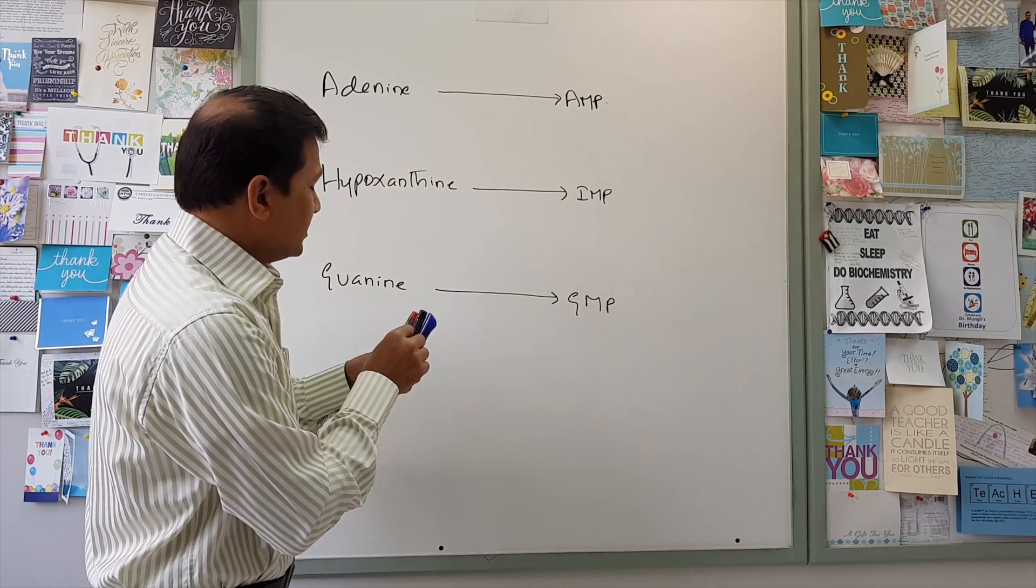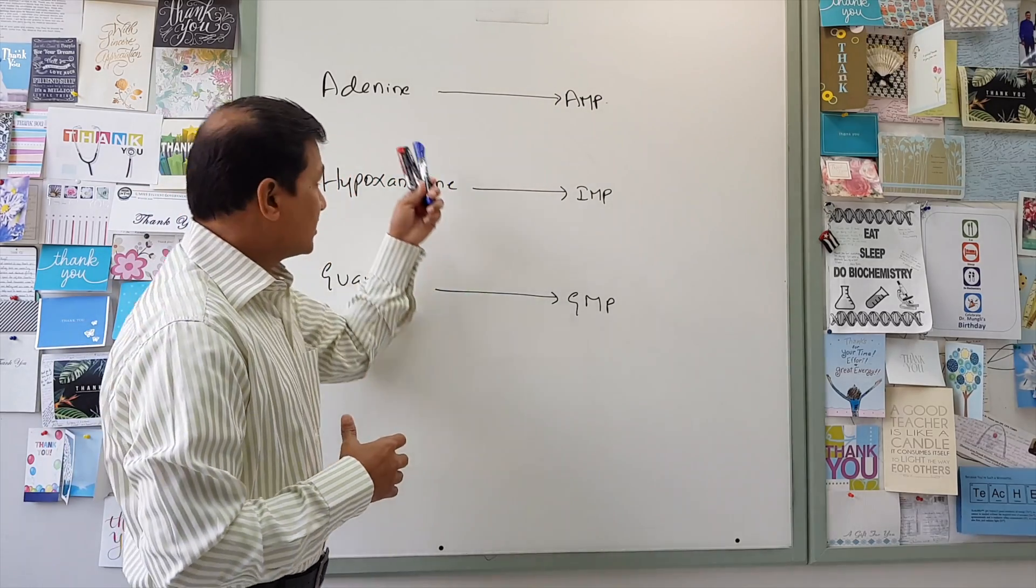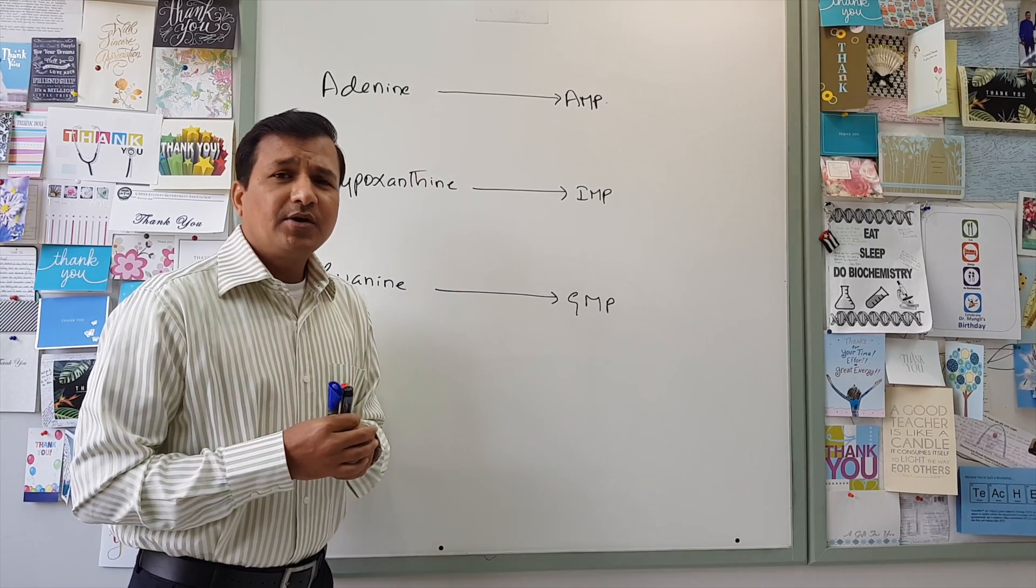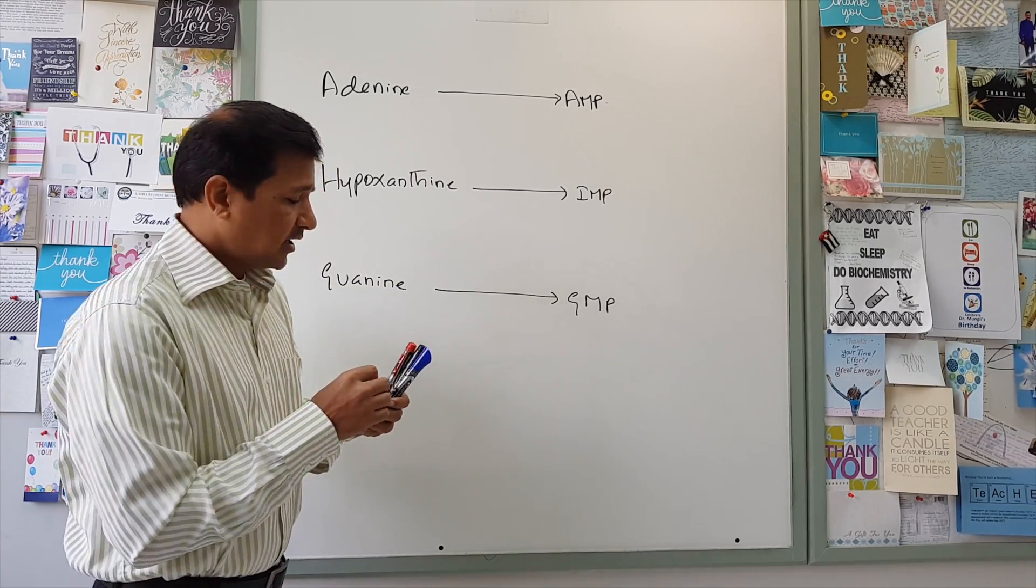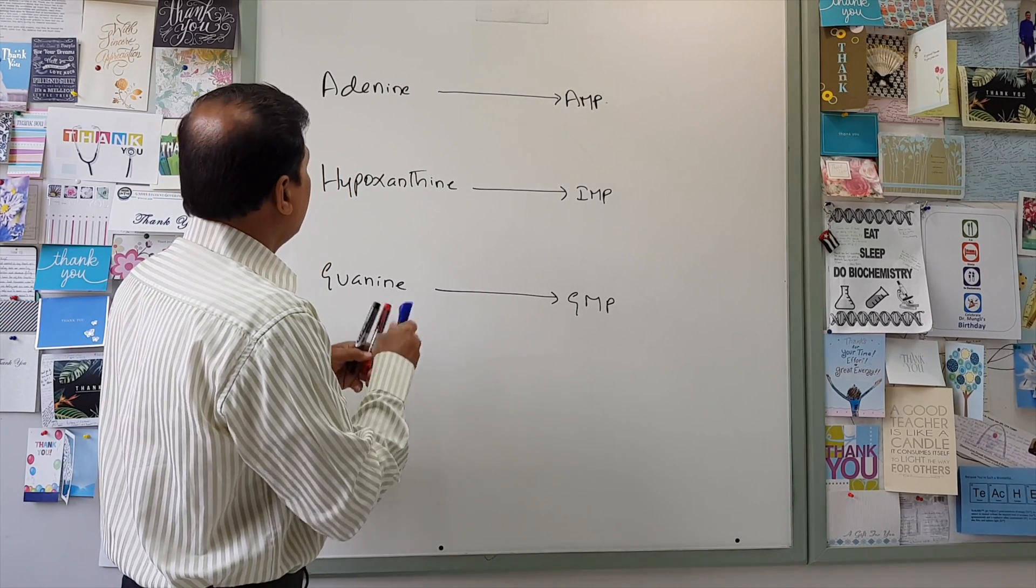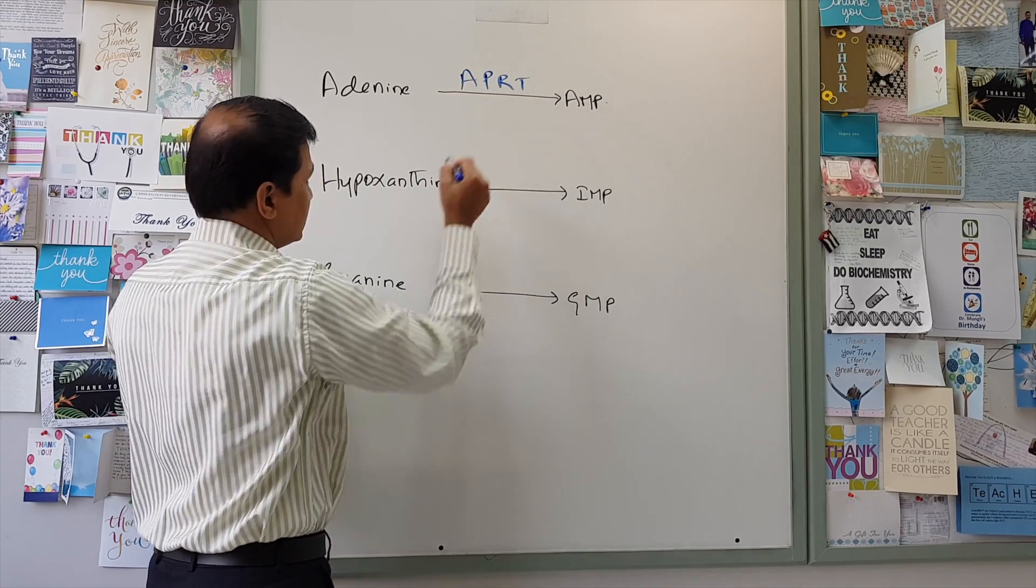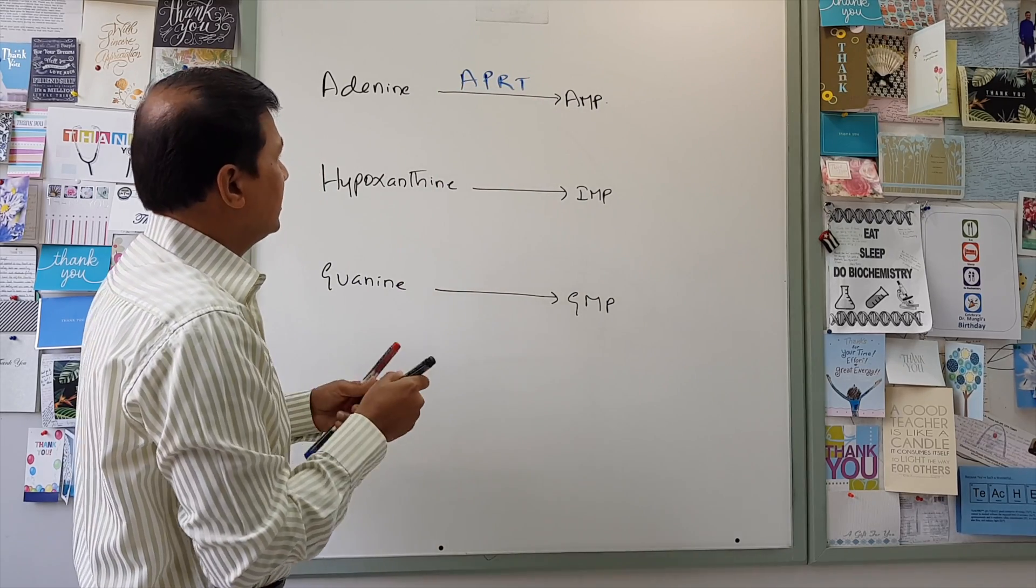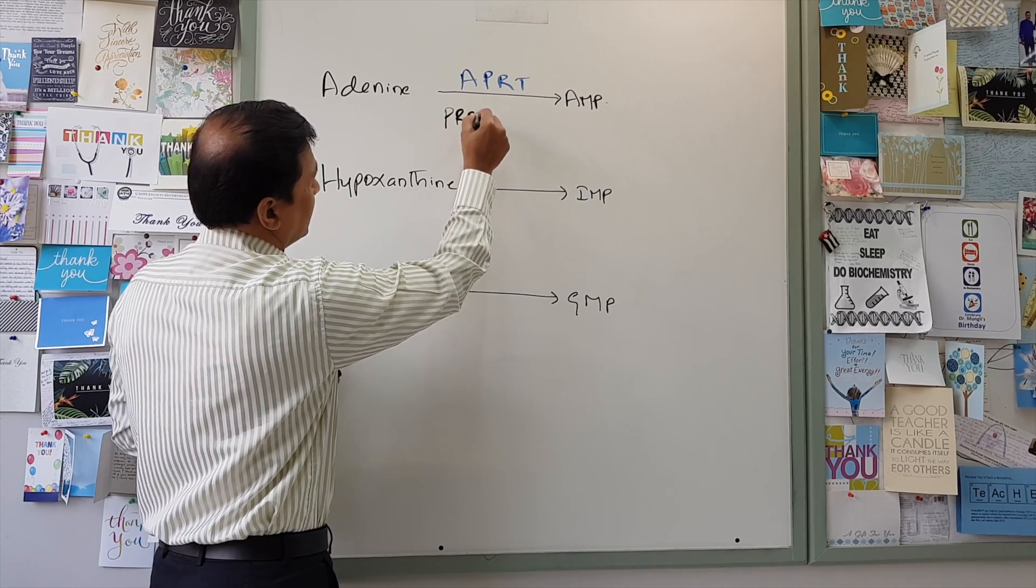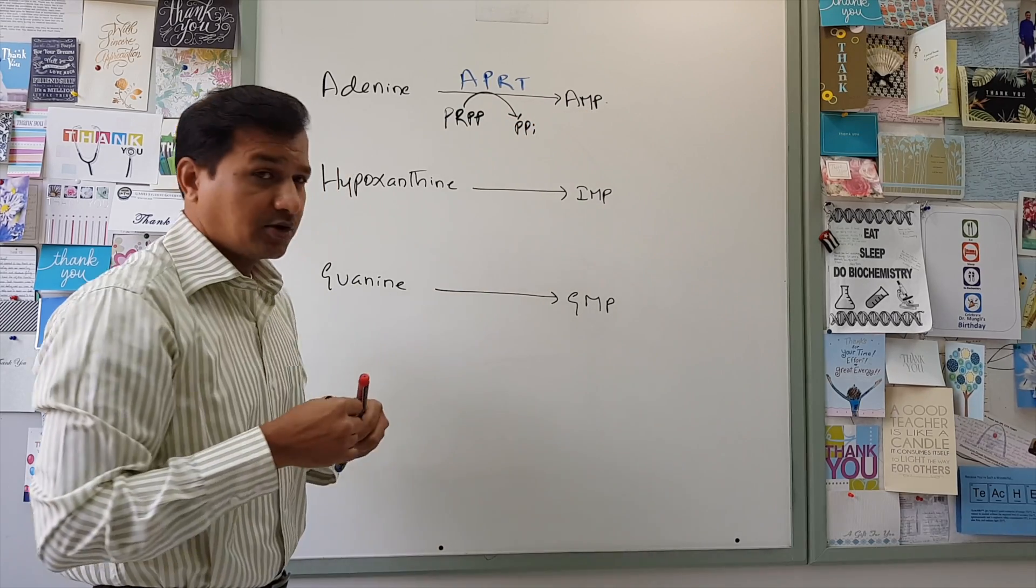So the purine salvage pathway involves salvaging of purine bases, that is adenine, hypoxanthine, and guanine, into their nucleotide forms. So this needs purine-phosphoribosyl transferase enzyme. So there are two purine-phosphoribosyl transferase enzymes. One is APRT enzyme, that is adenine-phosphoribosyl transferase enzyme, which will basically take ribose phosphate from PRPP, that is phosphoribosyl pyrophosphate, and release PPi and make adenosine monophosphate.